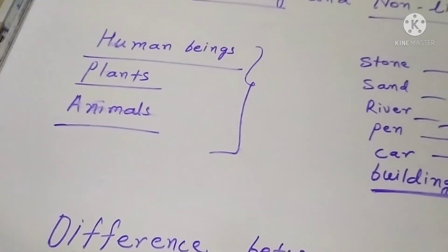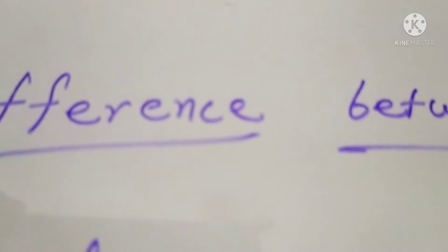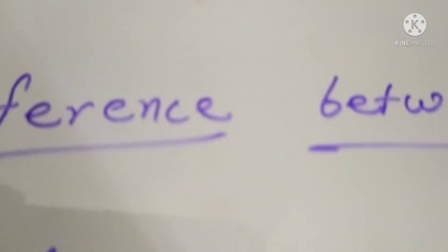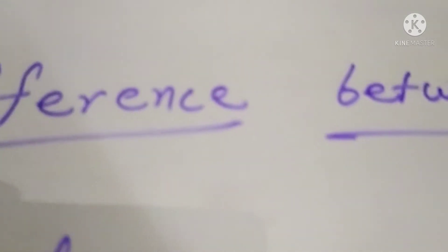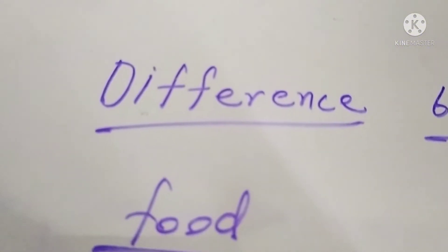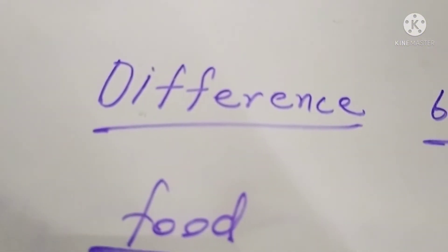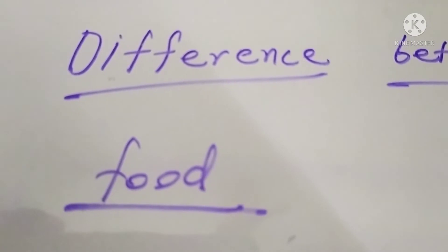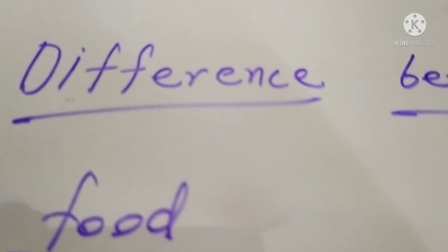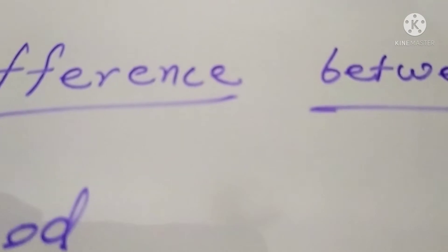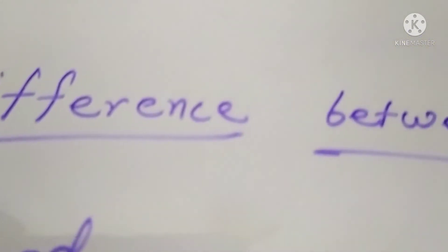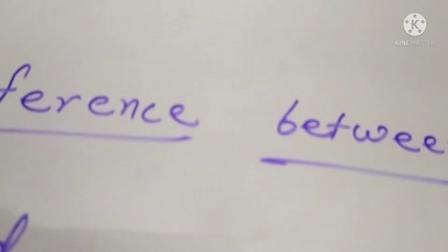Next difference: living things need food to grow. For our growth, for animals' growth, and for plants' growth, food is needed. But non-living things do not have any food.